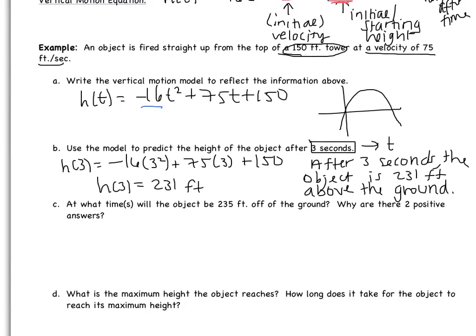Moving to part C. At what time will the object be 235 feet off the ground? So this is our H of T this time. So we have 235 equals negative 16 T squared, add 75 T, add 150. Okay, so this is solving a quadratic. So the first thing that I have to do is get my quadratics equal to 0. So I'm going to subtract 235. I get 0 equals negative 16 T squared, add 75 T, and then 150 subtract 235 is negative 85. And now I'm ready to go to the calculator. So if you would please take out your calculator.